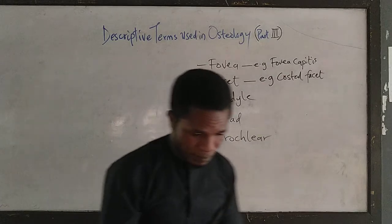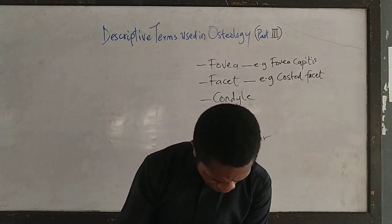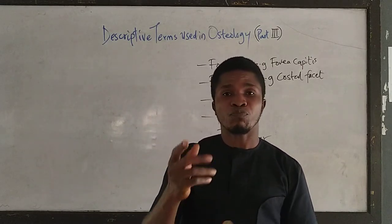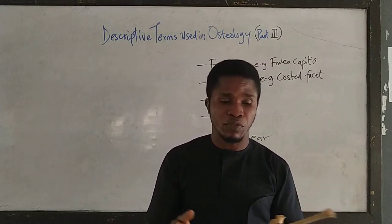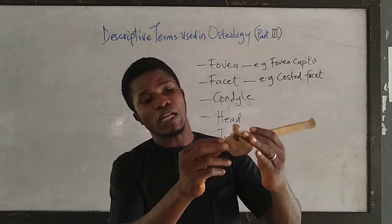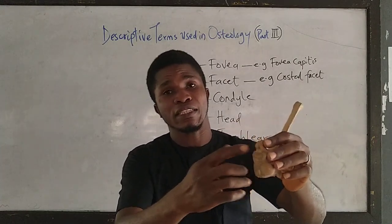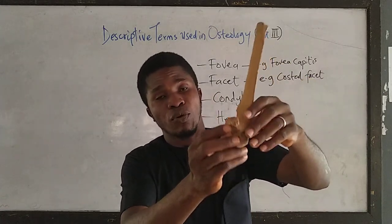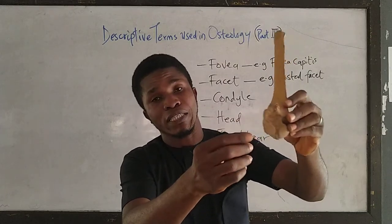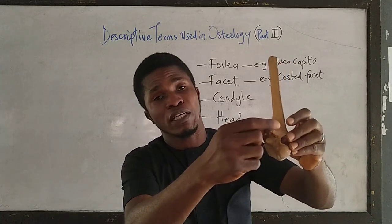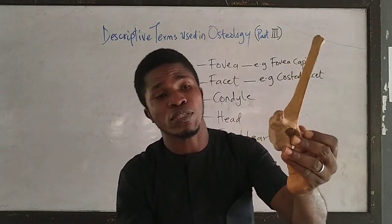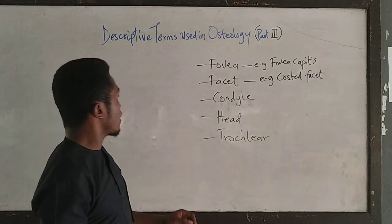The second term is facet. A facet is a small articular surface present on a bone. An example is the costal facet — that is an area where the rib attaches to the thoracic vertebrae. The head of the rib and the tubercle of the rib attach to the thoracic vertebrae. On the ventral aspect of the transverse process of the thoracic vertebrae is a small articular surface called the costal facet.